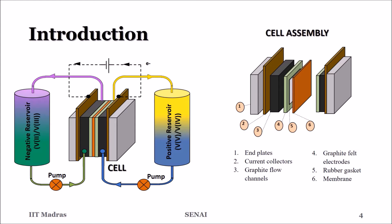The cell is an assembly of various components. It consists of a membrane, usually Nafion, which is sandwiched between the graphite felt electrodes held inside gaskets.